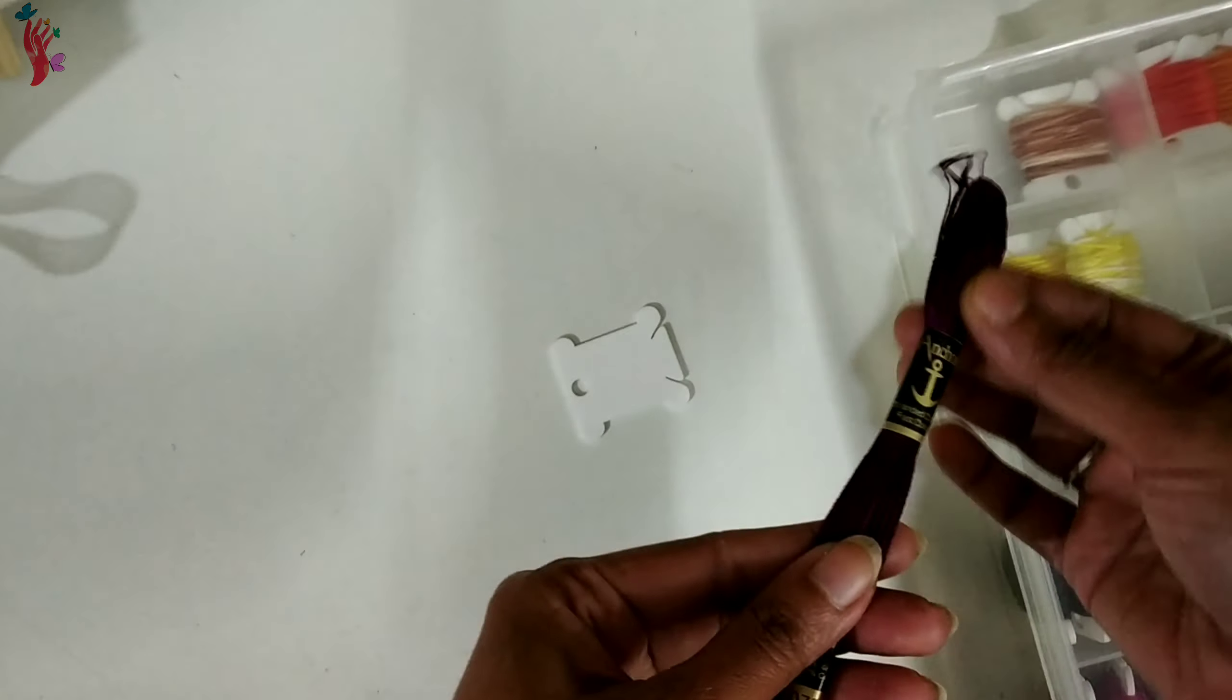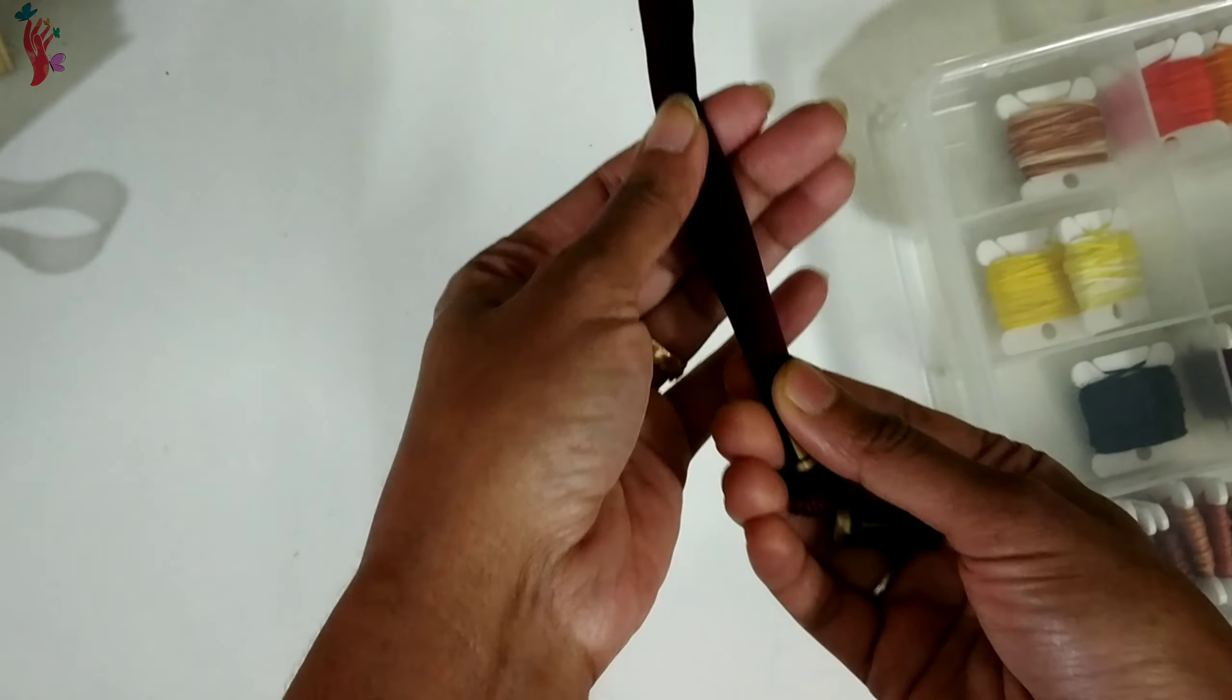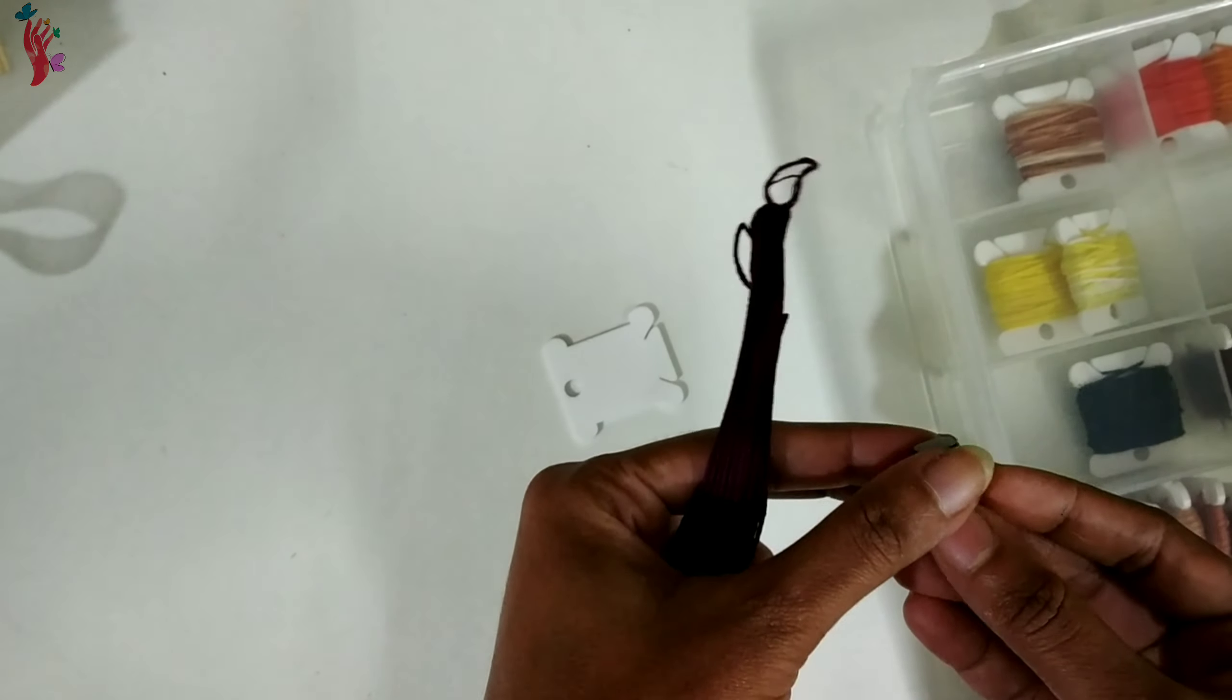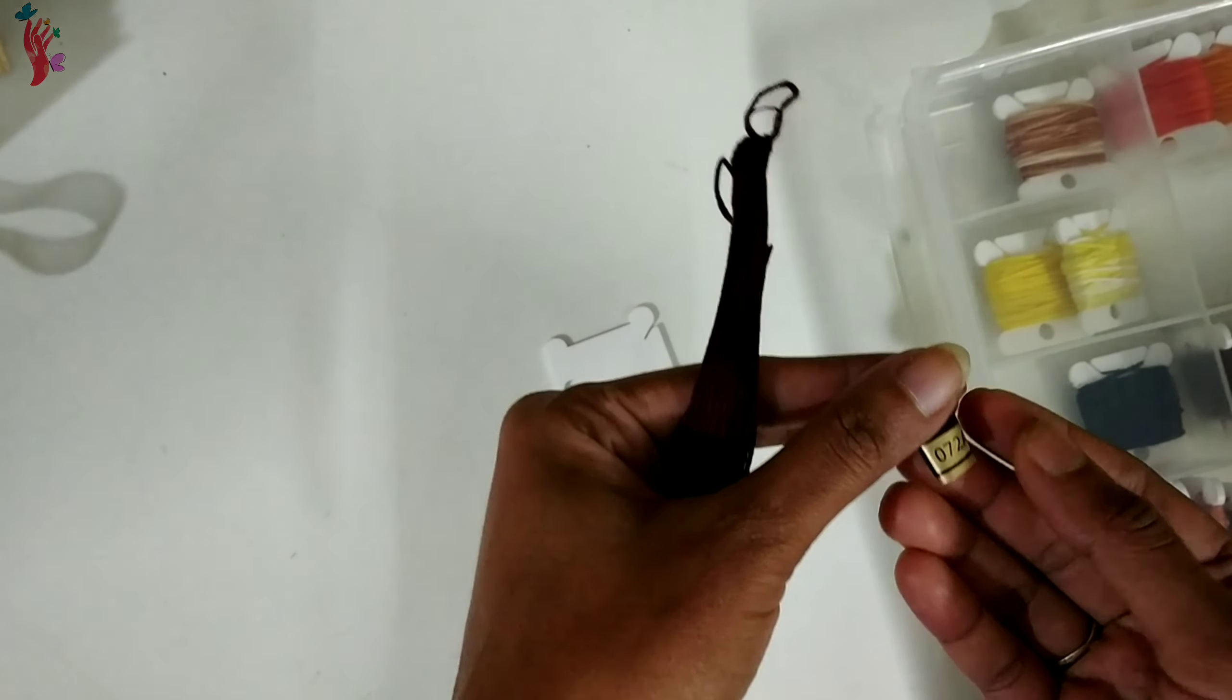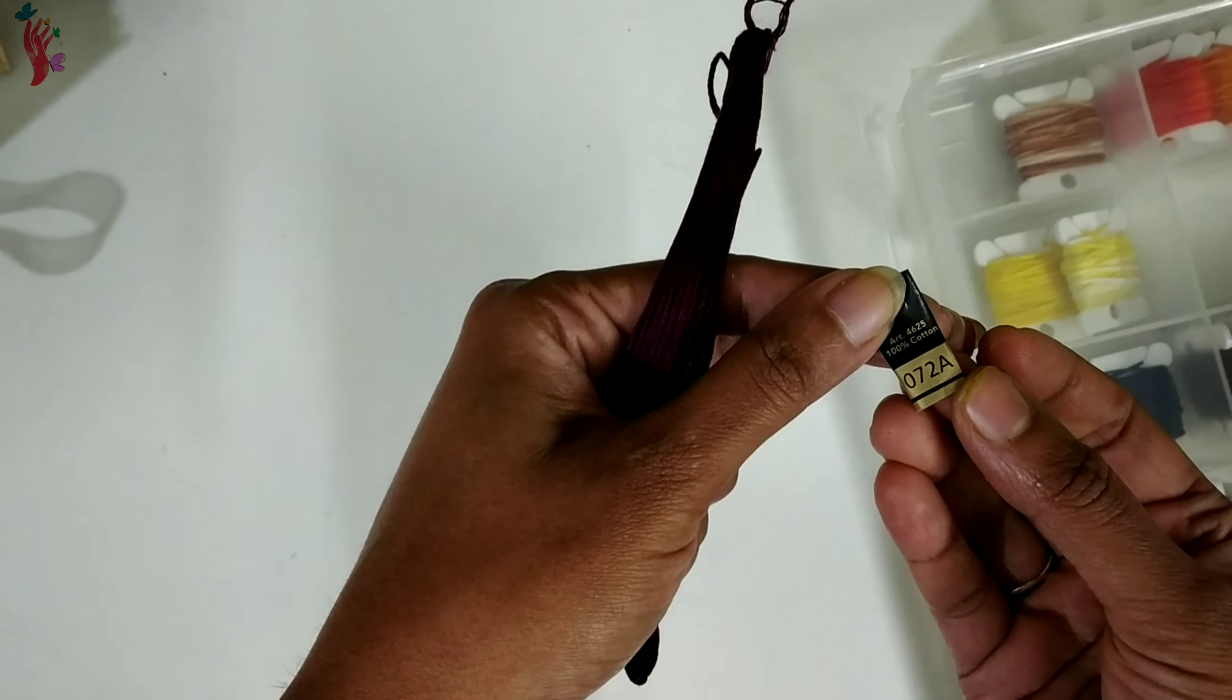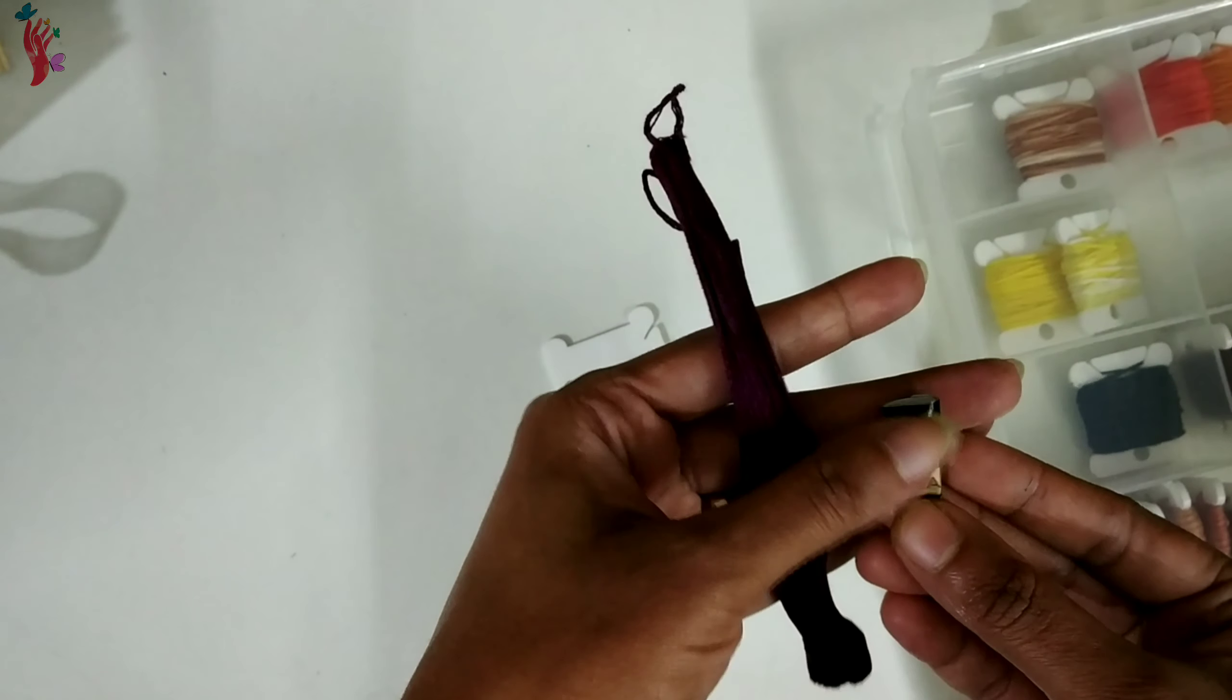Now we are going to make this thing. I have a thread. I have to cut these two pieces. I have a number of threads, 072A. This is the shade number.